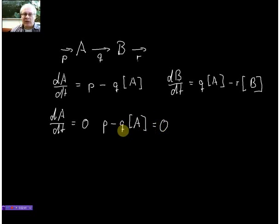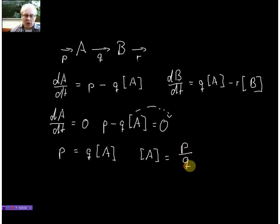We can very easily solve this equation, so we bring that to the other side, and we get p equals q times A. Or solving for A, we know that A in this case then would be p over q. So we can express the steady state concentration of A actually just simply by the rate constants p and q.